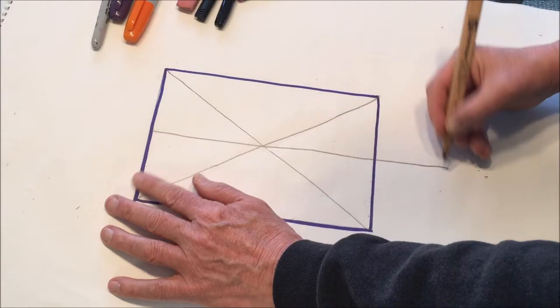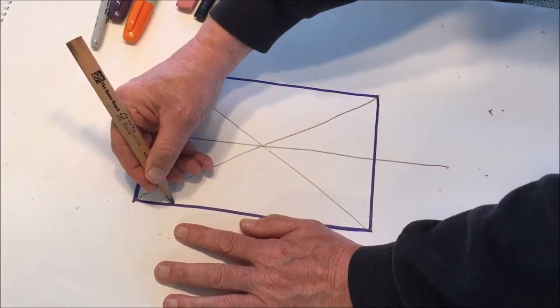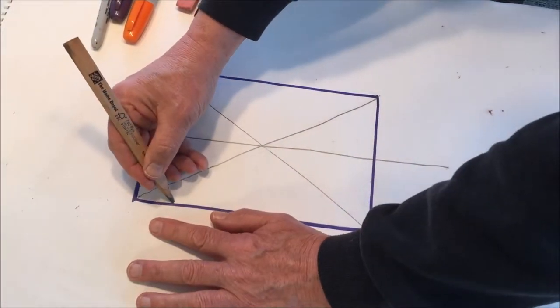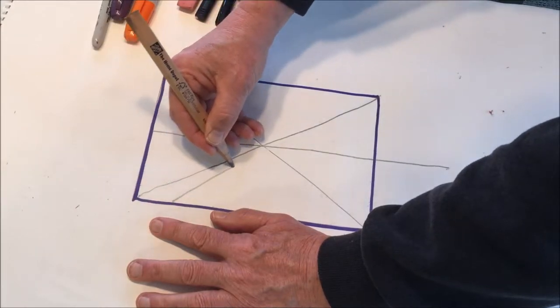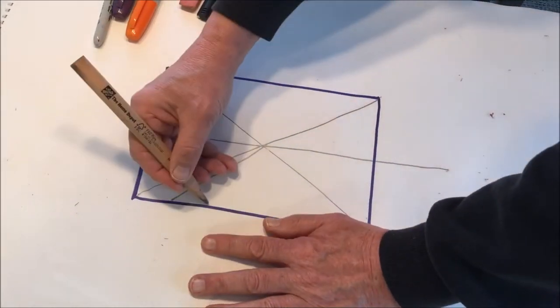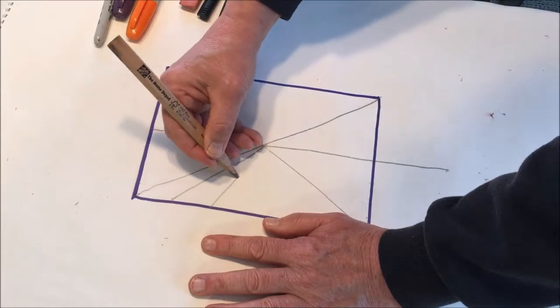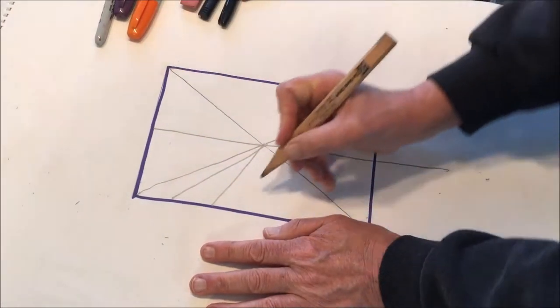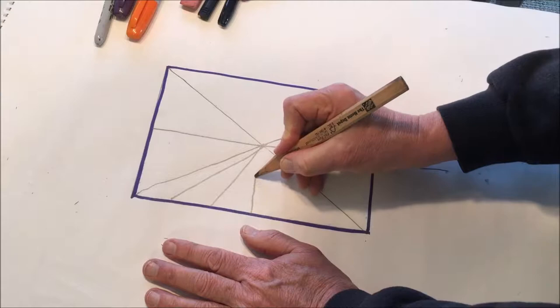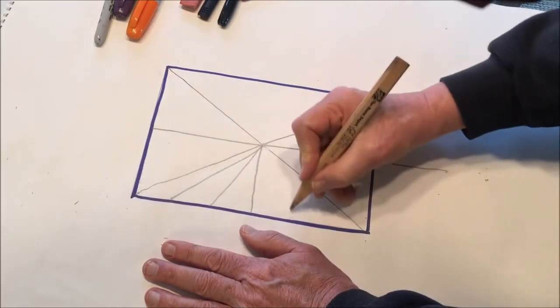It was discovered by Brunelleschi in about 1420, and it's basically just the attempt to represent three-dimensional space on a two-dimensional surface.